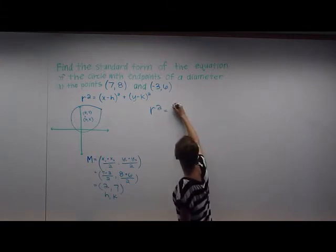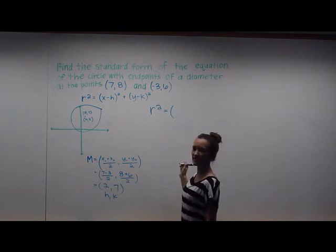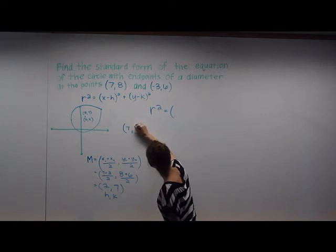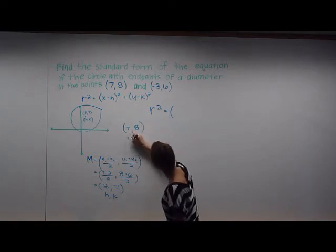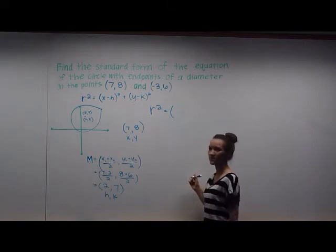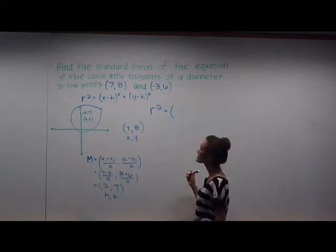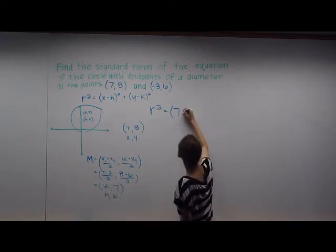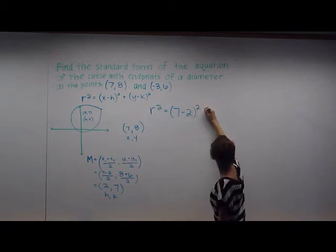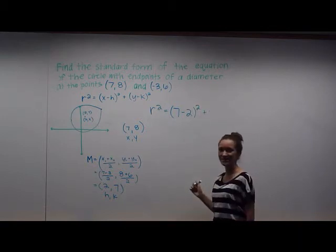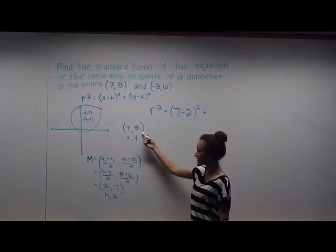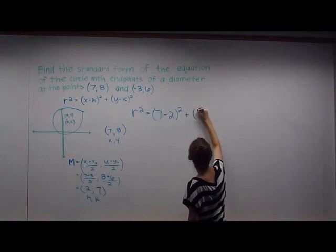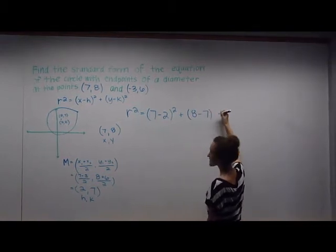r². And we can use the point (7,8) for our x and our y. r² = (x-h)². So x would be 7 minus h, which is 2, squared, plus (y-k)². y is 8 minus k, which is 7. And then we're going to square that.